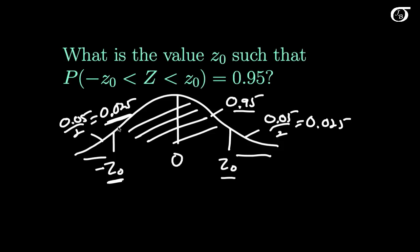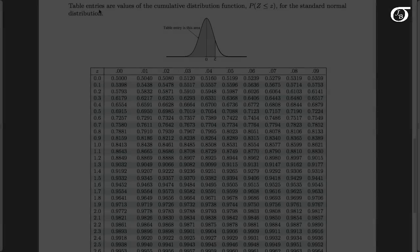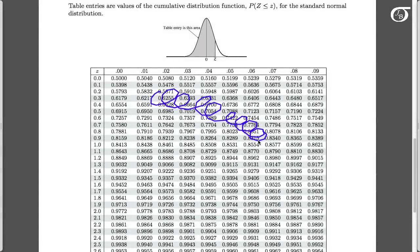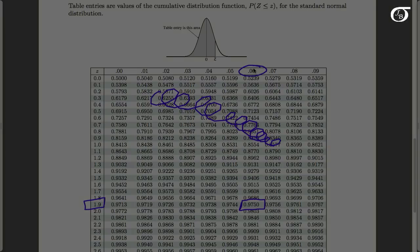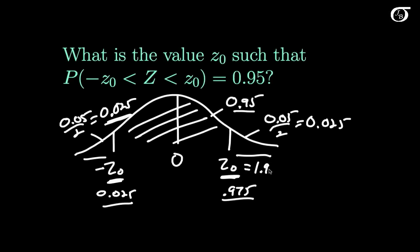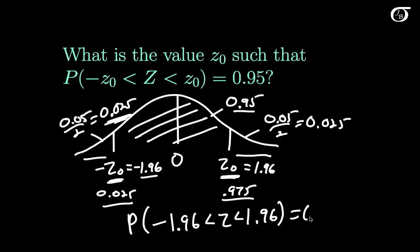Since our table gives the area to the left, I can look up 0.025 to find minus Z-naught, or look up 0.975 to find Z-naught directly. If I look up 0.975 in the body of the table — here we go — 0.975 corresponds to a Z value of 1.96. So Z-naught is 1.96, and the corresponding negative value is minus 1.96, which we could also find by looking up 0.025. Therefore, the probability that Z lies between minus 1.96 and 1.96 is 0.95 — and this will be important later in statistical inference.